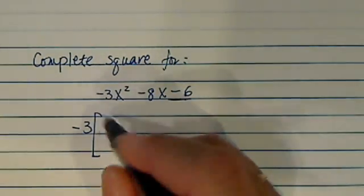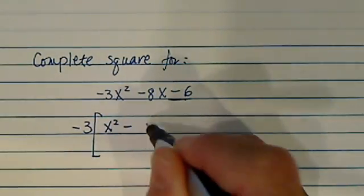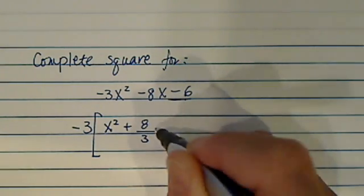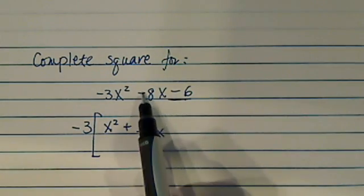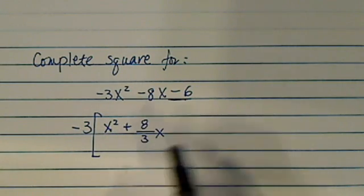So the first thing you need to do is pull the coefficient out. Leave this one alone there. So you have x squared minus 8, actually this is plus, over 3x. So because I divided by minus 3 here, minus minus becomes positive.